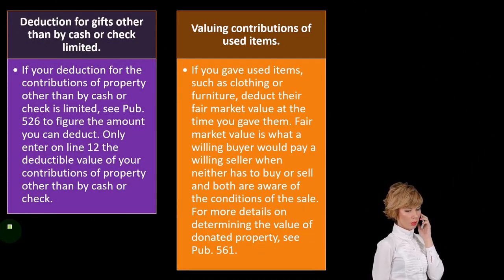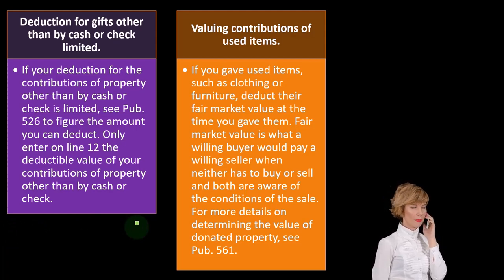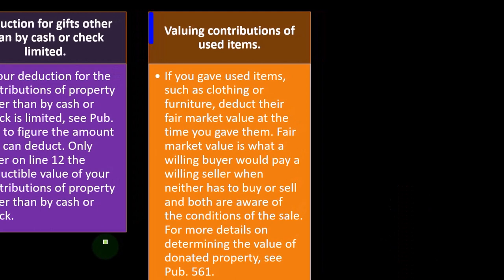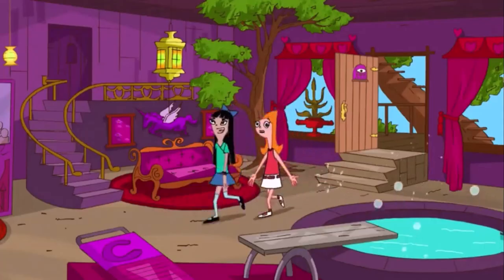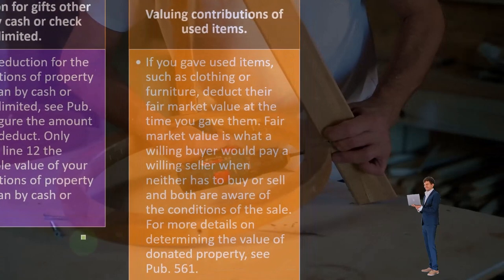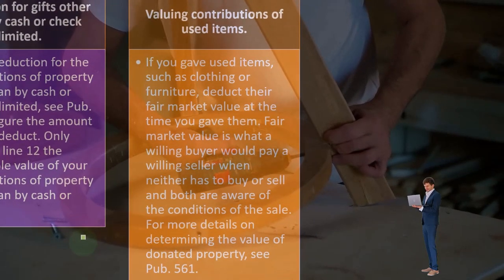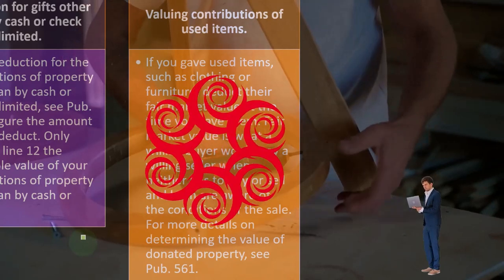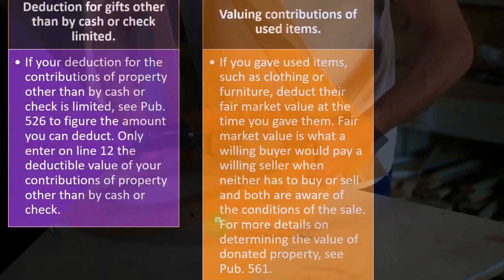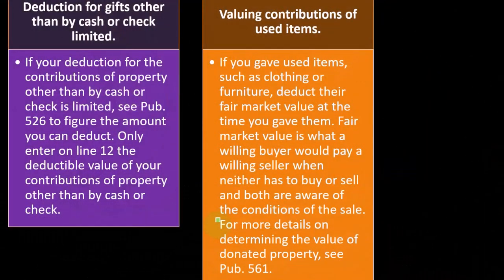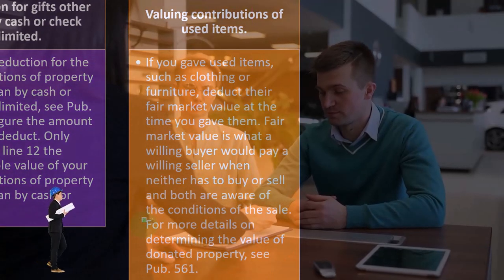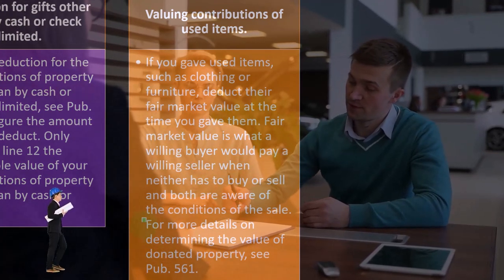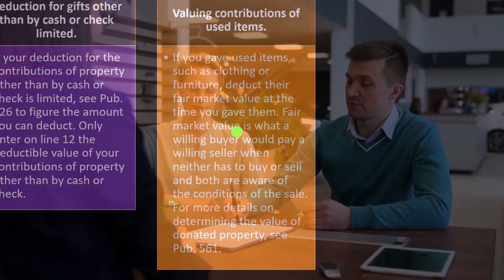Valuing contributions of used items. This is a common issue that comes up — what is the value of a used item? If you gave used items such as clothing or furniture, deduct their fair market value at the time you gave them. Fair market value is what a willing buyer would pay a willing seller when neither has to buy or sell and both are aware of the conditions of the sale. That can be difficult to determine in practice, so you will have to do some estimation. For more details on determining the value of donated property, see Publication 561.